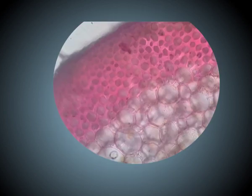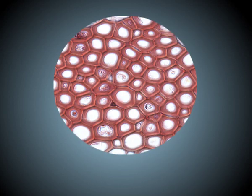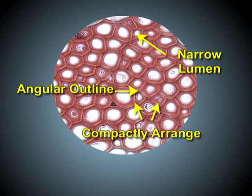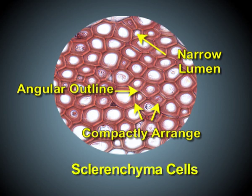In contrast to this, we also have thick-walled cells in the hypodermis and some cells of the cortex are thick-walled. These thick-walled cells have angular outline, they are compactly arranged, they do not have intercellular spaces, and they have narrow lumen. Such thick-walled cells with these characteristics are called sclerenchyma.